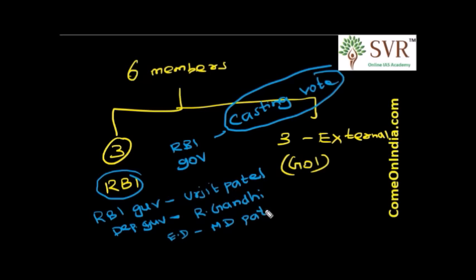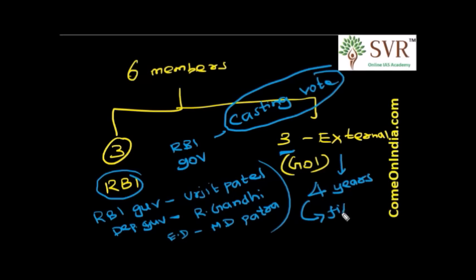From the government side, 3 external members are appointed. They will have a fixed 4-year term — this is an important exam point. The term cannot be renewed. To get the complete video lecture on the Monetary Policy Committee and its functioning, visit our website comeonindia.com.